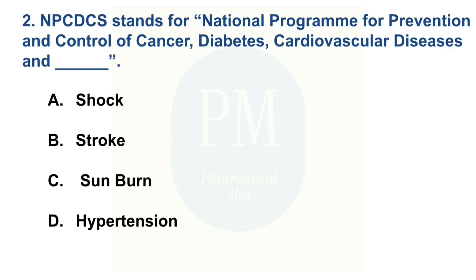NPCDCS stands for National Programme for Prevention and Control of Cancer, Diabetes, Cardiovascular Diseases and — Option A: shock. Option B: stroke. Option C: sunburn. Option D: hypertension. The correct option is Option B: stroke.